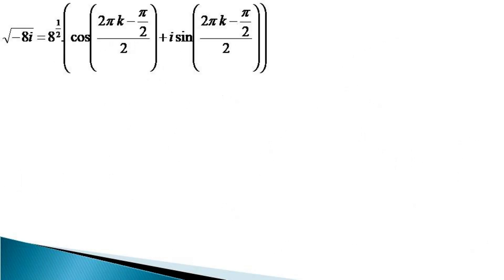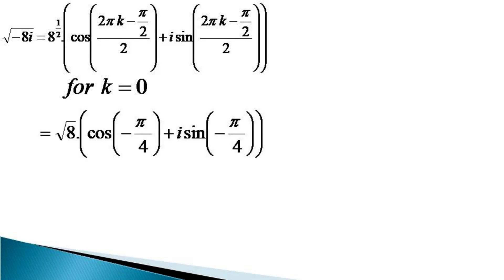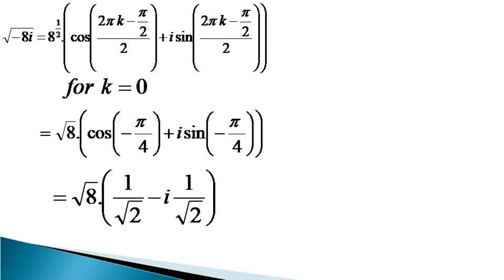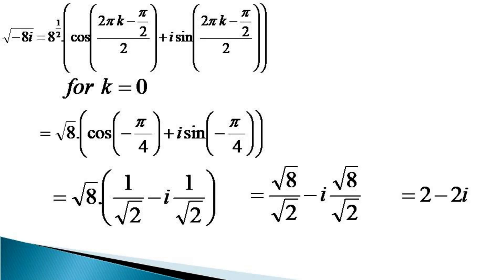The first root is evaluated by putting k = 0, which gives root 8 into [cos(−π/4) + i sin(−π/4)]. This becomes root 8 into [1/√2 − i/√2], which equals √8/√2 − i·√8/√2, giving us 2 − 2i. So the first root of √(−8i) is 2 − 2i.